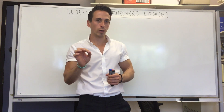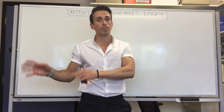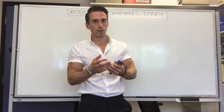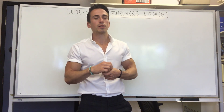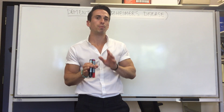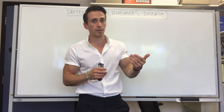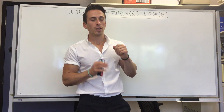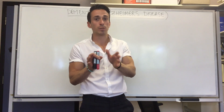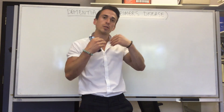Alzheimer's disease is the most common neurodegenerative disease in the world — the second most common is Parkinson's disease. It is so common that 10% of people aged over 65 years have Alzheimer's disease.